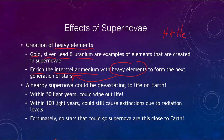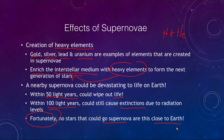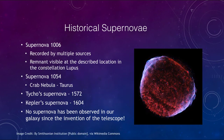A supernova could actually be devastating if it occurred close to Earth. Calculations show that a supernova within about 50 light-years would wipe out all life on the planet, and within about 100 light-years it could still cause great extinctions due to high radiation levels. However, we don't need to worry about that because fortunately there are no stars that could go supernova this close to Earth — the nearest candidates would be many hundreds of light-years away.